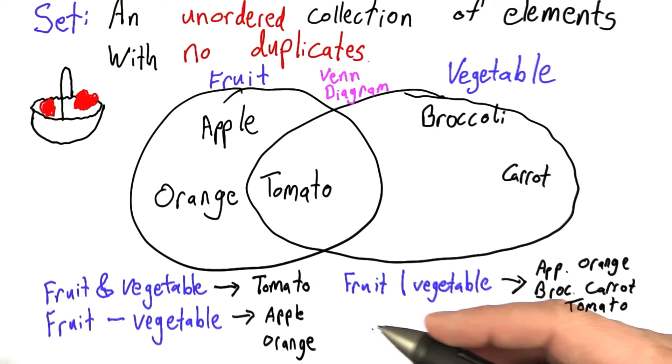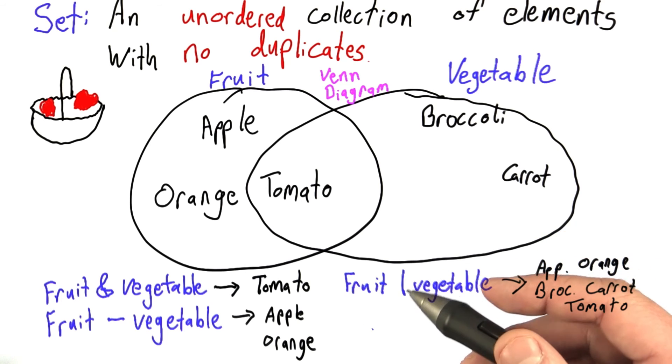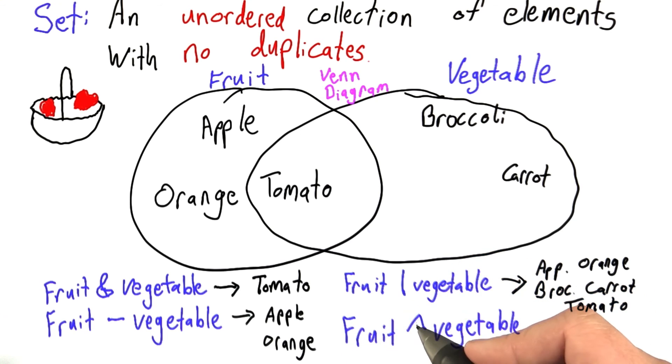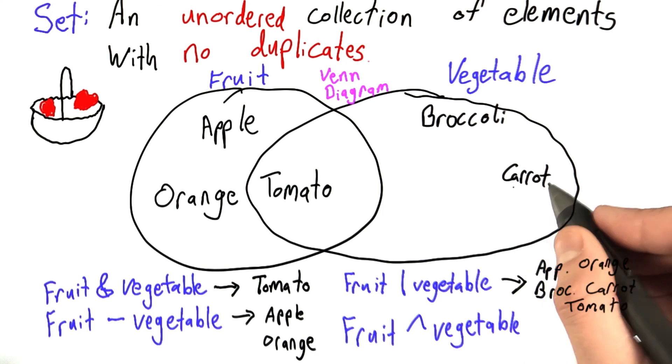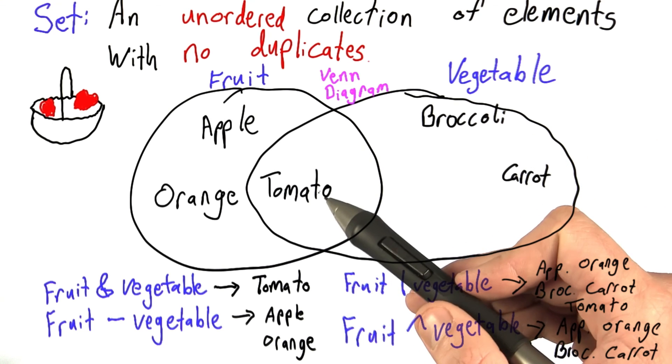The last operation I'm going to talk about is asking which elements are fruits or vegetables but not both. And this is known as the symmetric difference. And here we've used the carrot to indicate that, which is not the same as this carrot. And this is just all of the entries except for tomato.